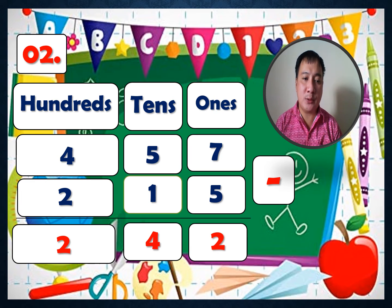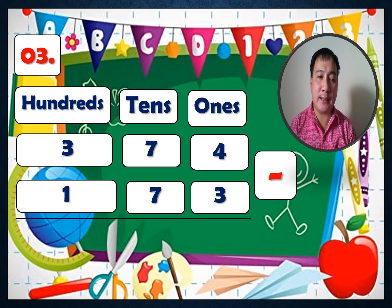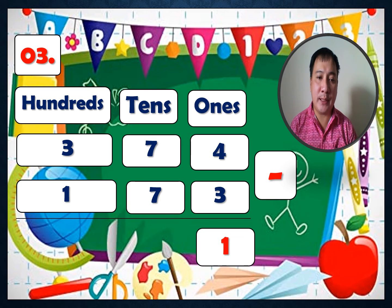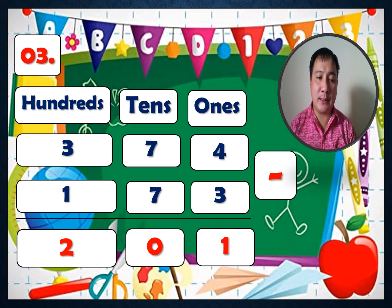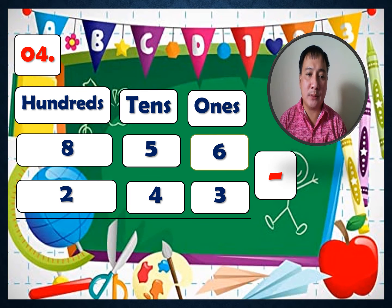Practice number three: 374 minus 173. Ones: 4 minus 3 equals 1. Tens: 7 minus 7 equals 0. Hundreds: 3 minus 1 equals 2. The answer is 201.